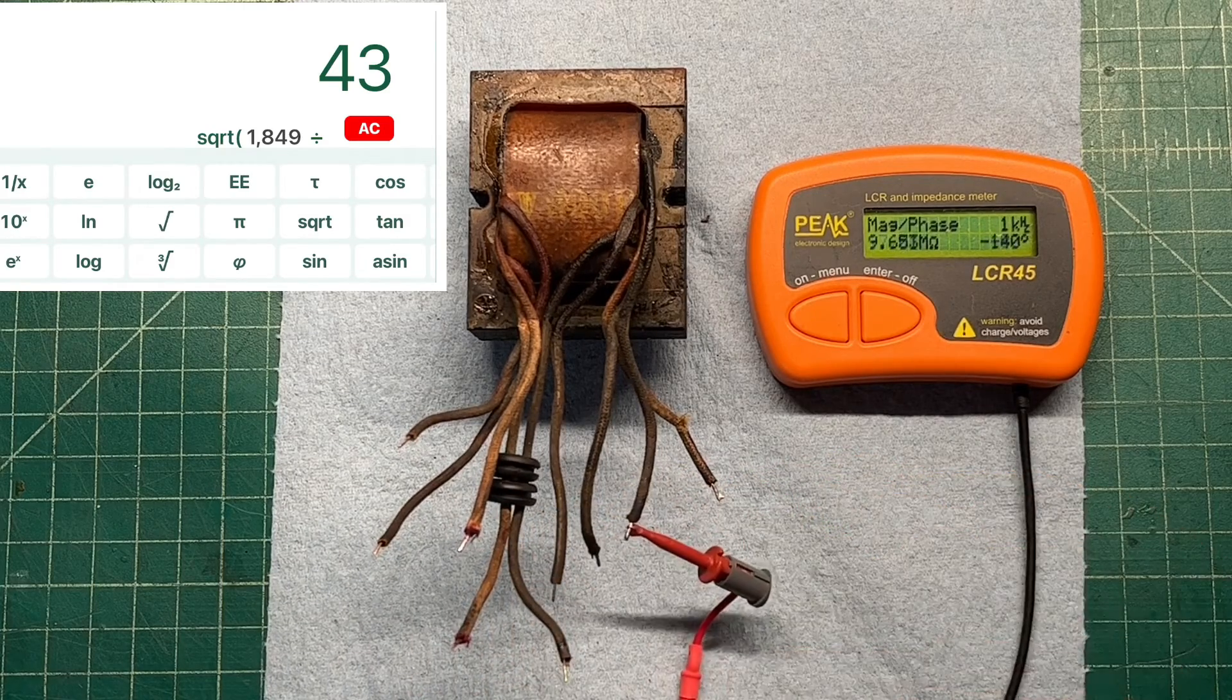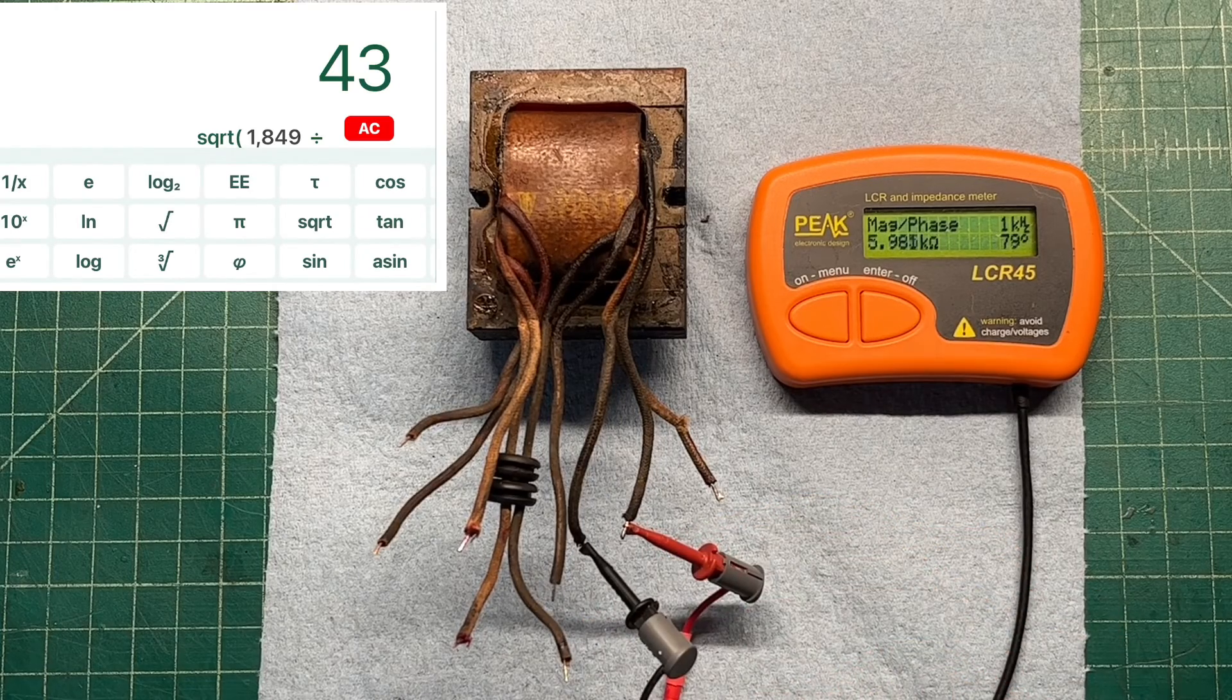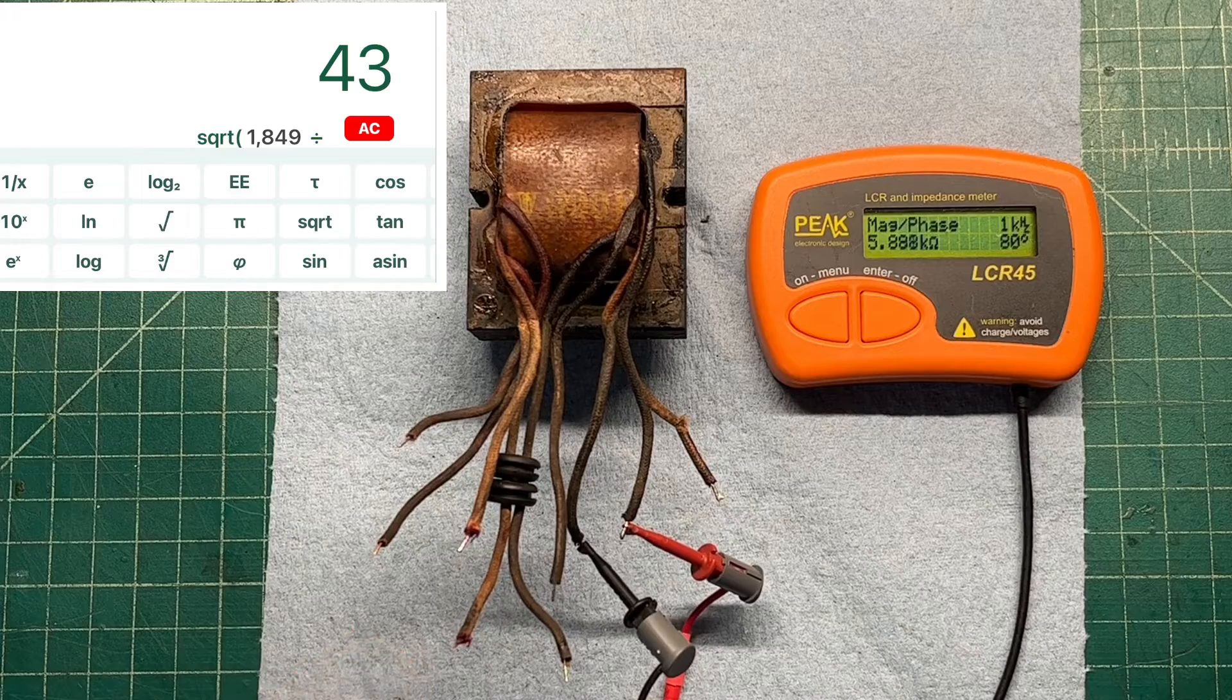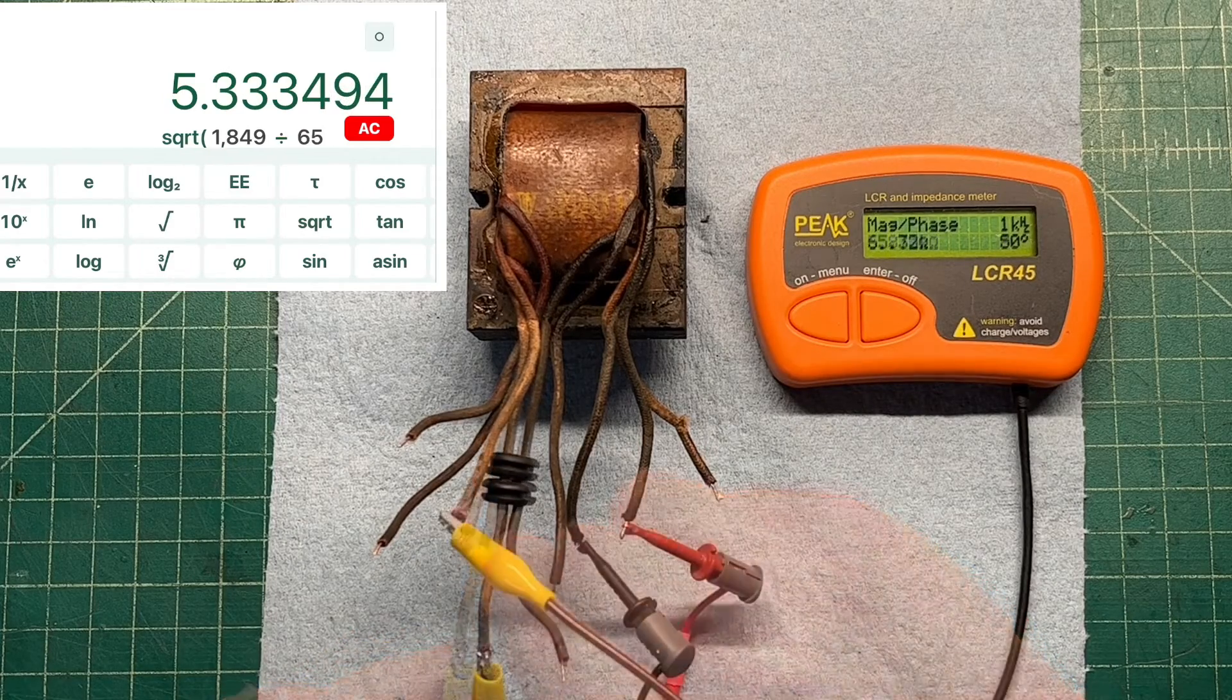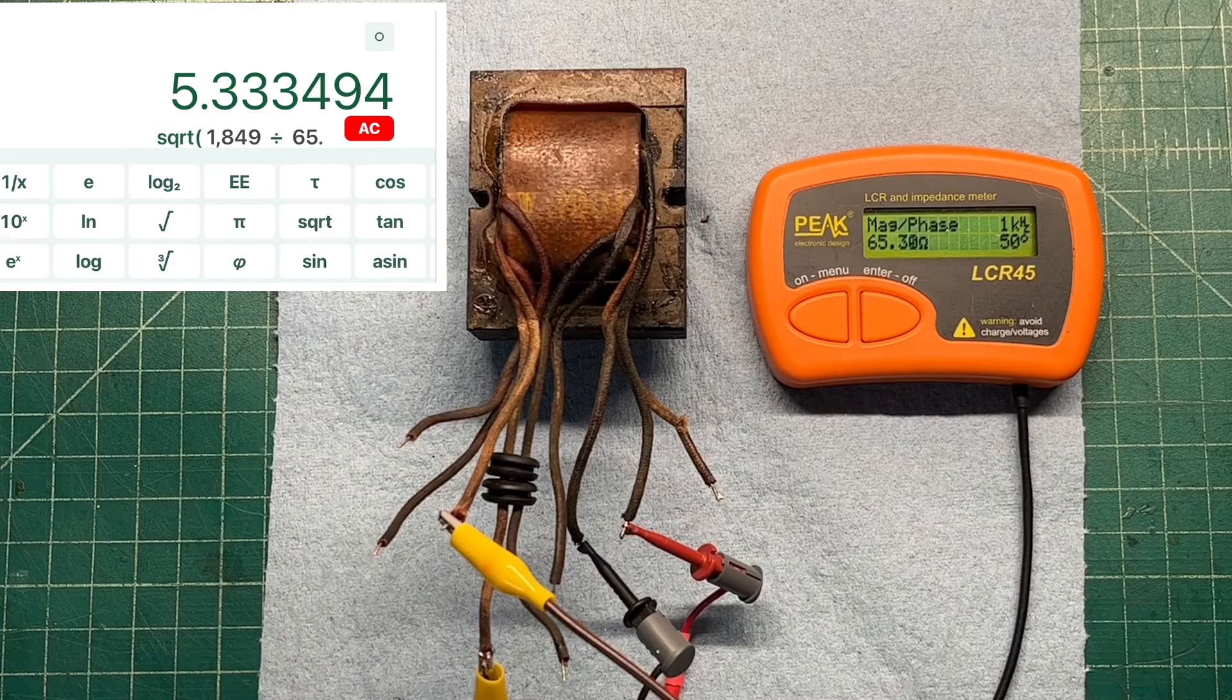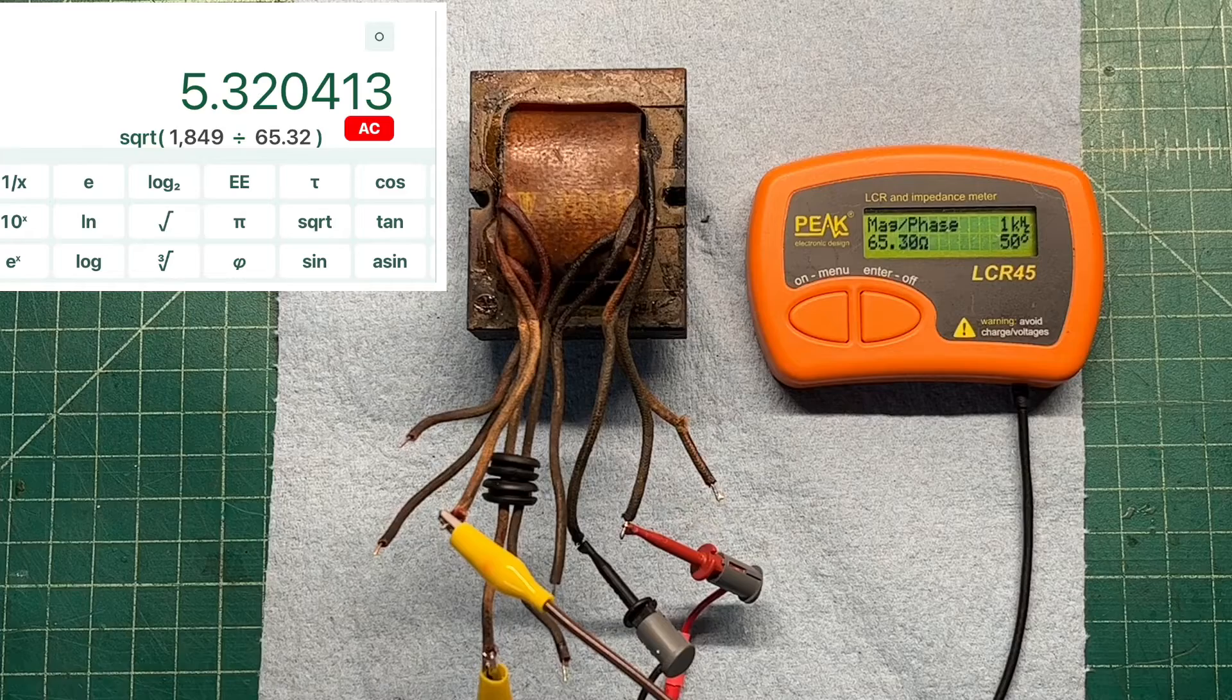So same drill here. I'm going to go back to the primary side. So I'm going to short out the entire high voltage winding here in 6532. And you can see that gives me a turns ratio of about 5.32.